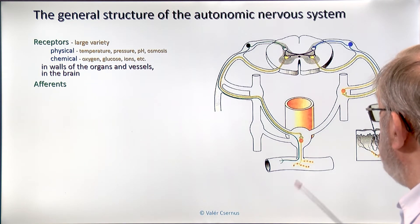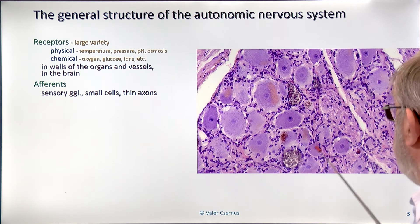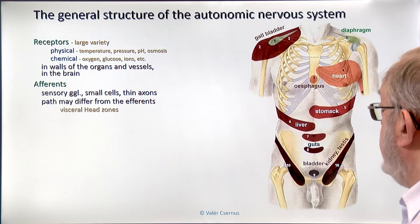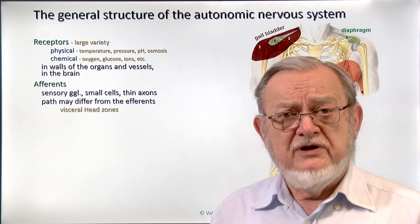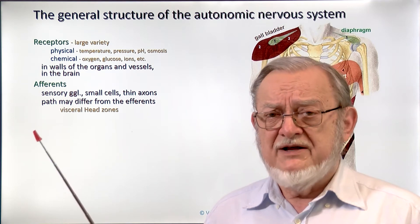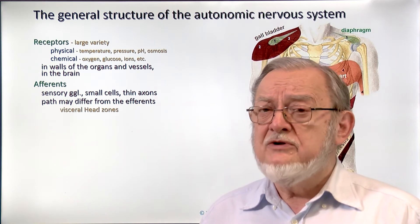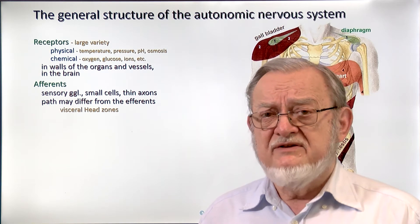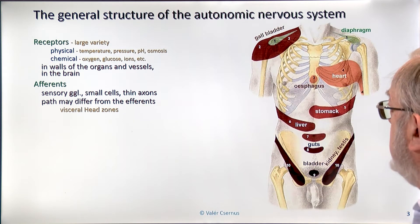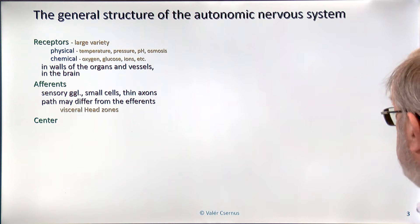The afferent pathways are very similar to those of the somatic system. They have thin axons and small pseudounipolar nerve cells in the peripheral sensory ganglia. An important thing to know is that the afferent and efferent pathways of the same organ can differ — they can work differently. So the autonomic motor pathway for a certain organ does not necessarily follow the same route as the sensory pathway going back. This is why we have different locations of the visceral head zones, which I will discuss later with the somatosensory part of the lecture.